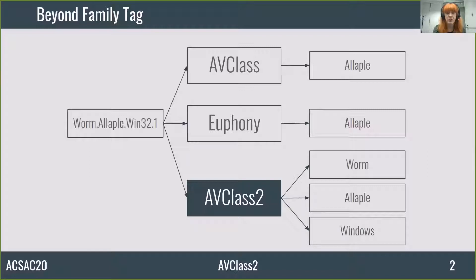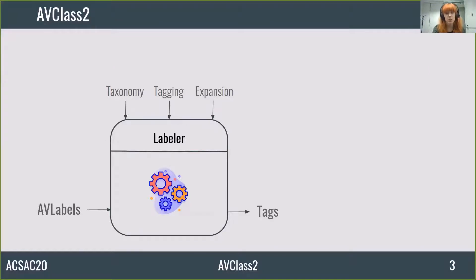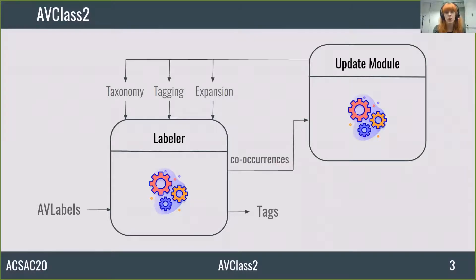AV Class 2 is an evolution of AV Class, so it inherits some properties, like being open source and automatic. AV Class 2 is composed of two modules. The first one is the labeler, which receives AV labels as input and gives a list of tags. In order to extract the tags, it uses tagging and expansion rules, but also a taxonomy. The tool ships with default ones, so the analyst can use it out of the box. As malware evolves over time, the taxonomy and the tagging and expansion rules need to be updated. So we developed a second module which is able to automatically update them.